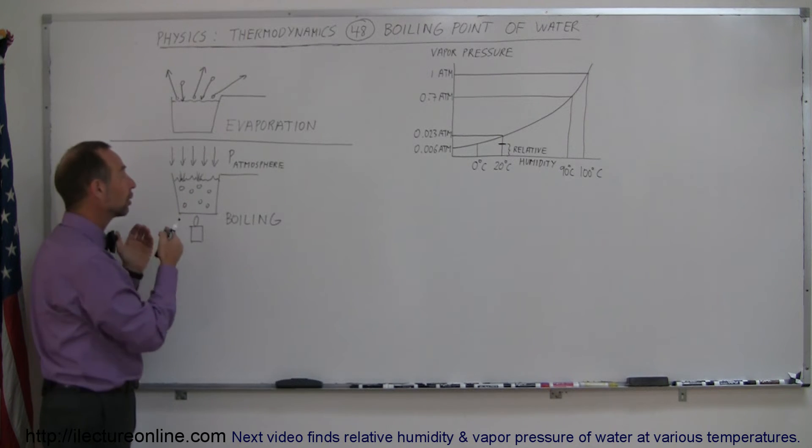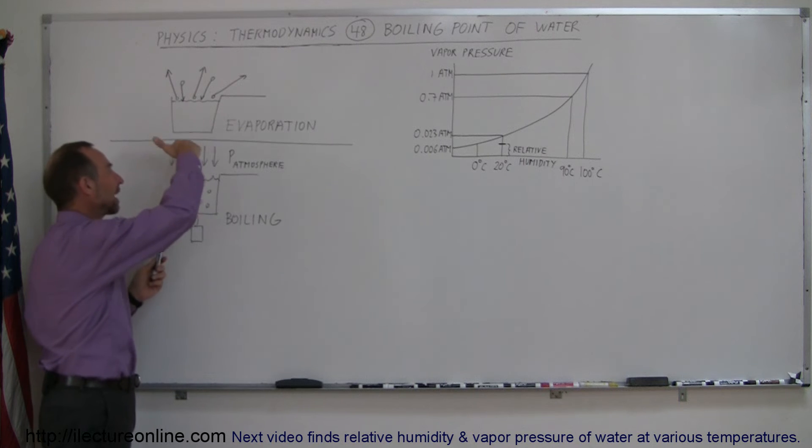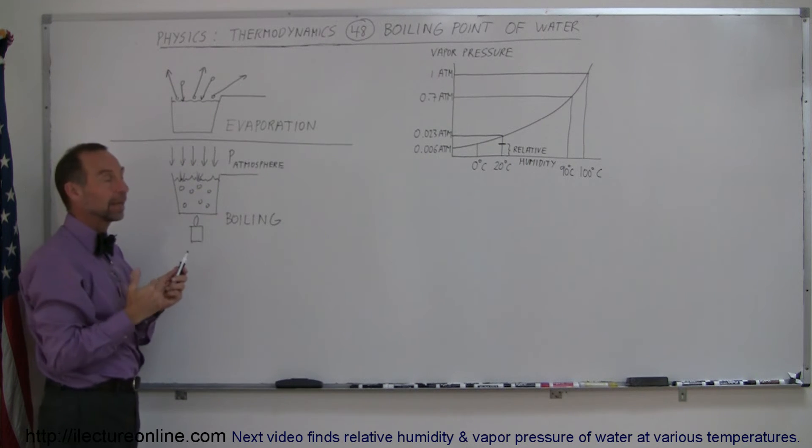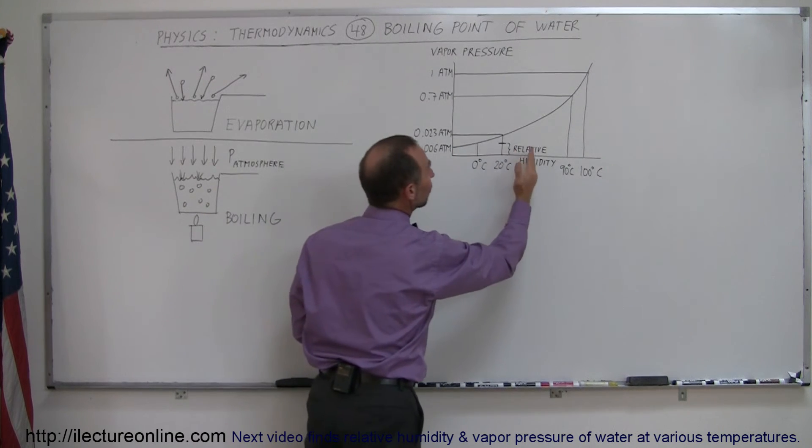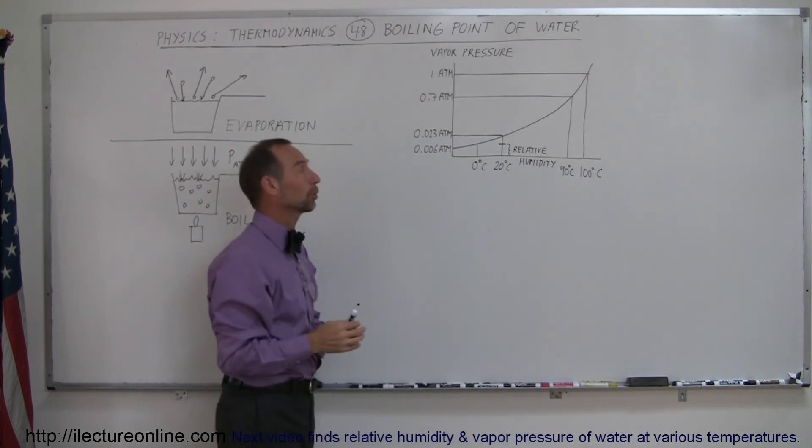In addition to that, boiling can only occur if the pressure of the atmosphere doesn't prevent it. For example, the greater the atmospheric pressure, the hotter the temperature needs to be for boiling to be able to occur.